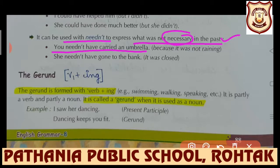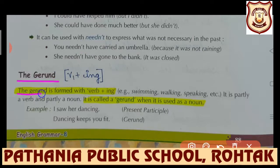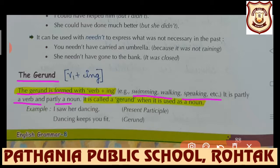Further, we have the gerund. Gerund is the first form plus '-ing'. Gerund is used as a noun in the sentence. The gerund is formed with verb plus '-ing', like 'swimming', 'walking', 'speaking', etc. It is partly a verb and partly a noun - it is partly a verb because the main verb is there, and partly a noun because of its place in the sentence.